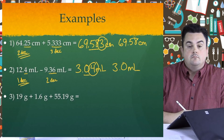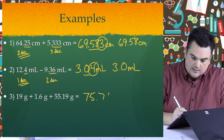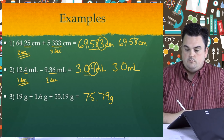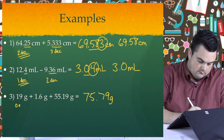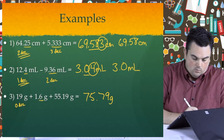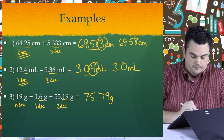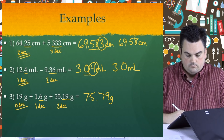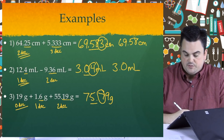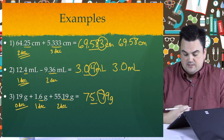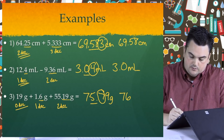Example three: 19 grams plus 1.6 grams plus 55.19 grams. Unrounded answer: 75.79 grams. The first measurement has zero decimal places — no decimal point visible, so not very accurate. The second has one, and the third has two. The lowest is zero decimal places, so we round to the ones place. We circle the seven — since seven is greater than five, we round up. Final answer: 76 grams.